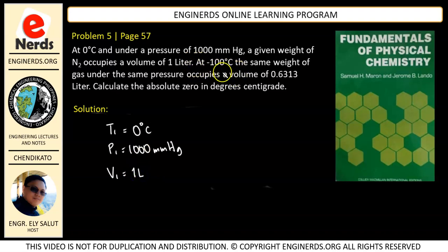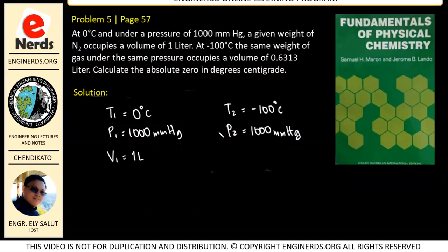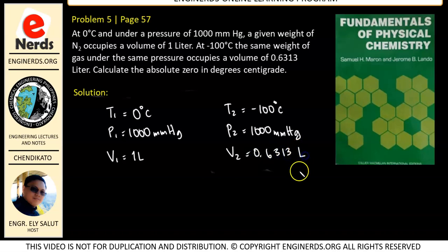At negative 100 degrees Celsius, that is our second condition, T2 equals negative 100 degrees Celsius. At the same weight of gas and under the same pressure of 1000 mmHg — so we have constant pressure in this problem — it occupies a volume of 0.6313 liters.